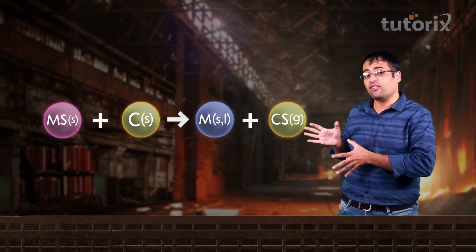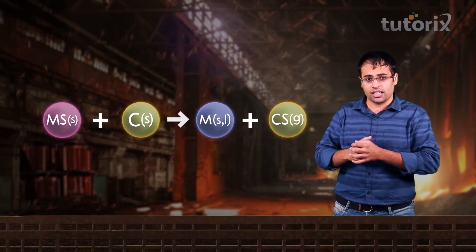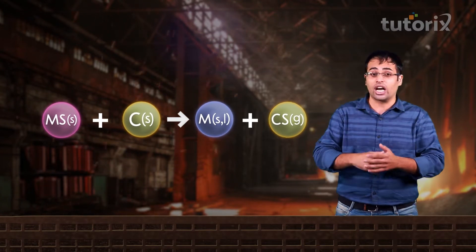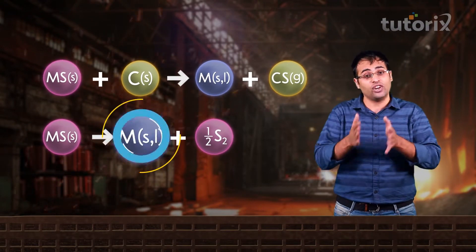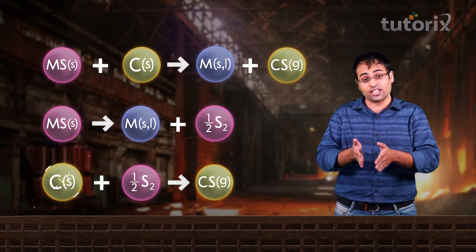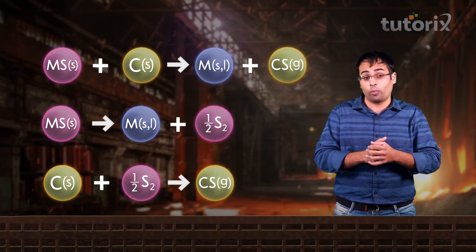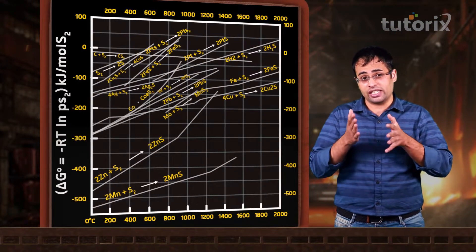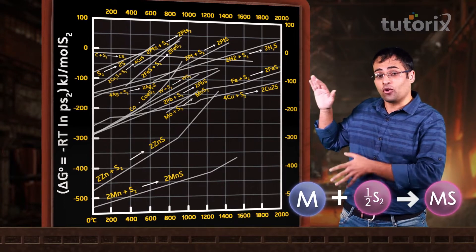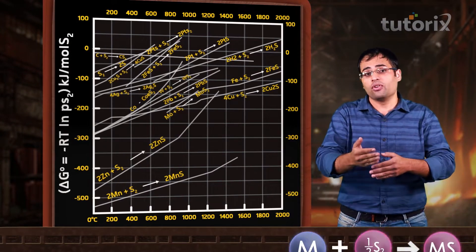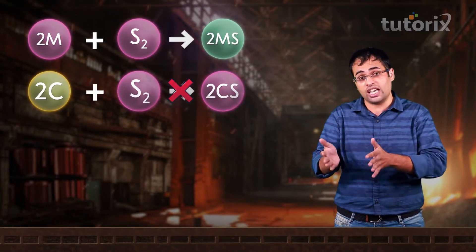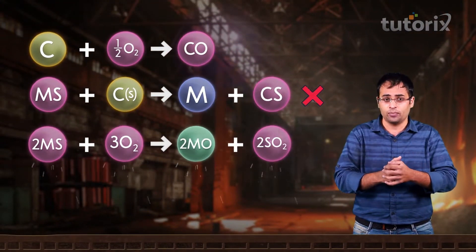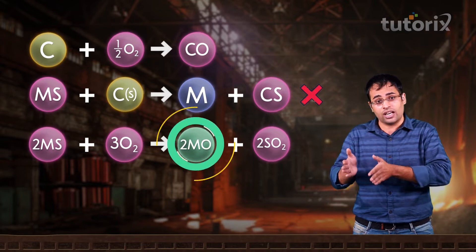Now, suppose we have to directly reduce a metal sulfide with carbon. The metal sulfide reacts with carbon to give free metal plus CS. This reaction can also be thought to occur in two steps: in the first step, the metal sulfide decomposes to give free metal and sulfur, and in the second step, this sulfur reacts with carbon to form CS. Here there is a problem — the compound CS does not exist in nature. So if we were to plot Ellingham diagrams for formation of sulfides, you will notice that there is no line for the conversion of C to CS. Because there is no line for conversion of C to CS similar to the steep negative slope of C to CO, carbon is a very poor reducing agent for sulfides. Therefore, most sulfides are first converted into their oxides and then the reduction is carried out.